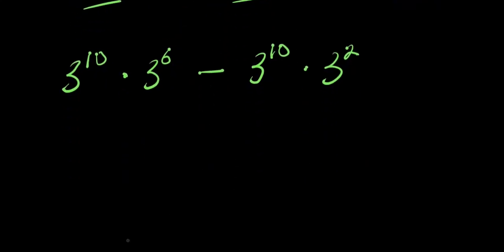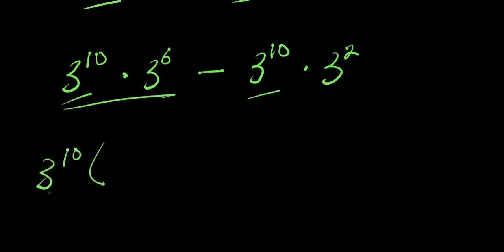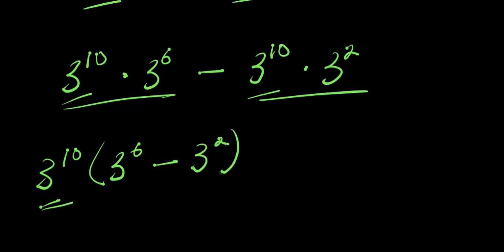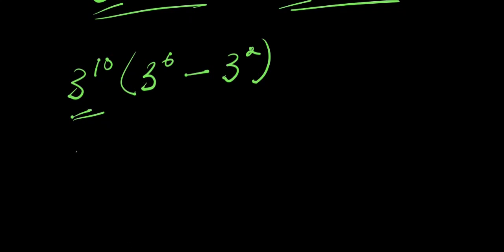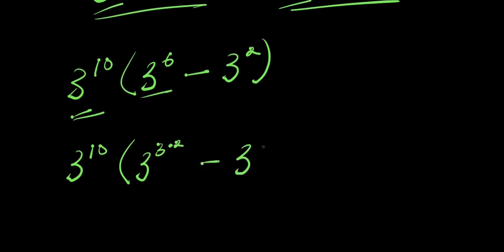Now 3 to the power of 10 appears in both terms, so we can factor it out. Factoring out 3 to the power of 10, we have 3 to the power of 10 times the quantity 3 to the power of 6 minus 3 to the power of 2. We can express 3 to the power of 6 as 3 to the power of 3 times 2, and 3 to the power of 2 as it is.